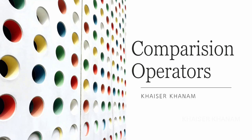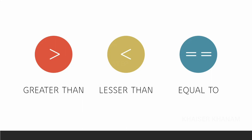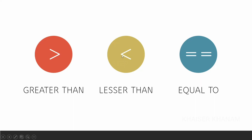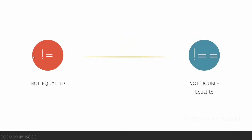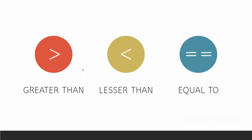Using only true and false, we are going to compare numbers and strings, and we will understand what happens when we compare numbers with strings, and what happens when we compare strings with strings. Everything we are going to study in this session. Before that, let me show you a few comparison operators: greater than, less than, double equal to, triple equal to, less than equal to, greater than equal to, not equal to, and not double equal to. We'll study each one with practical examples.